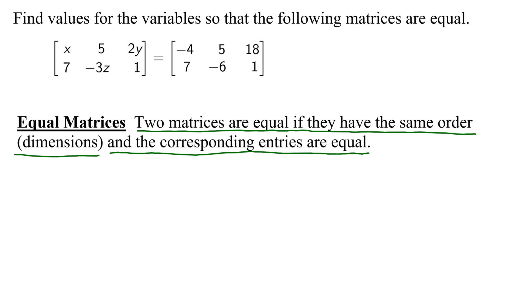So do these two matrices have the same order or dimension? The first one on the left has two rows and three columns, so it is a 2 by 3 matrix. The matrix on the right has two rows and three columns, so it is also a 2 by 3 matrix. So the two matrices have the same order or dimensions.